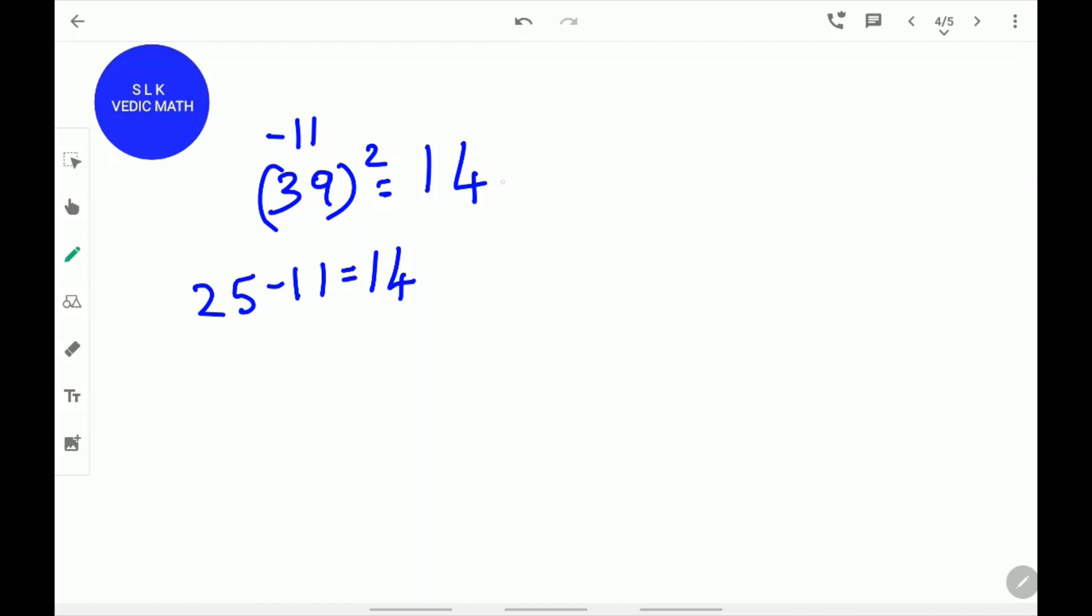Now, we need to find the last two digits. Now, square this number 11. 11 square is 121. Write 1 above 4 since there is only supposed to be 2 digits left. 21.